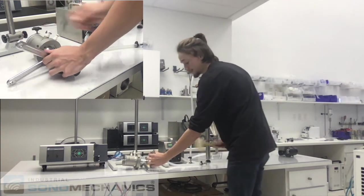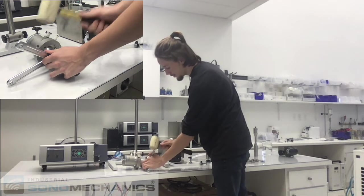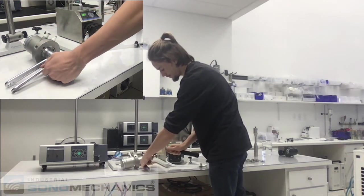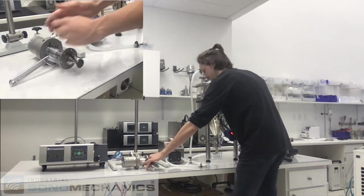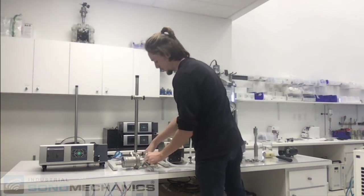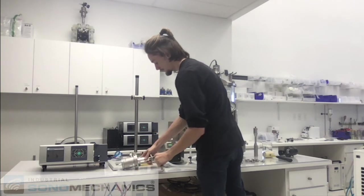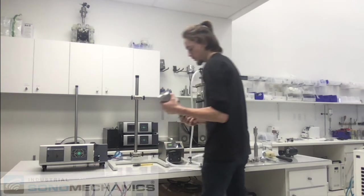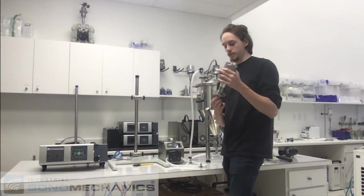Grab your rubber mallet and tap on the spanner wrench until it gives away. Remove both spanner wrenches and set them aside. Now we're going to unscrew the horn from the transducer.